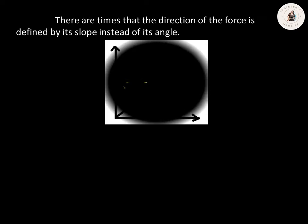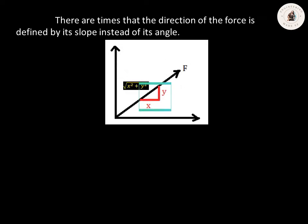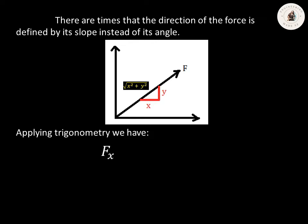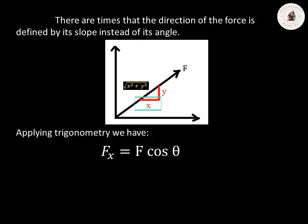There are times that the direction of the force is defined by its slope instead of its angle. To solve for Fx, we need to apply trigonometry. Recalling the formula for Fx which is F multiplied by cosine theta, to solve for cosine theta we substitute the given x and y values. The formula for cosine theta is adjacent over hypotenuse. Looking at the given triangle, the adjacent side is x and the hypotenuse is the square root of x squared plus y squared. That's why Fx equals F multiplied by x over the square root of x squared plus y squared.